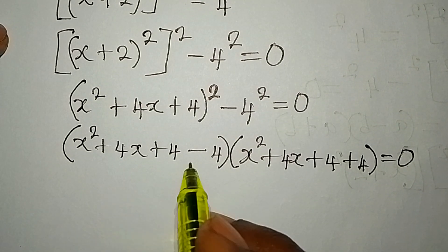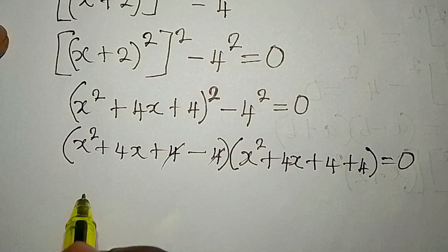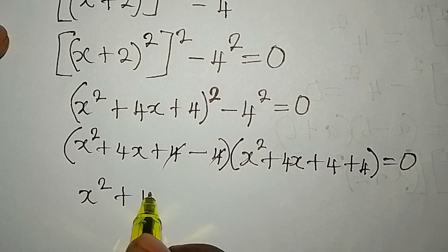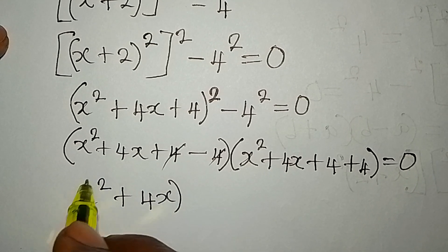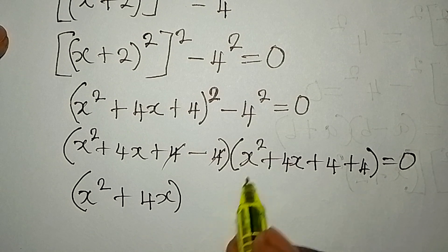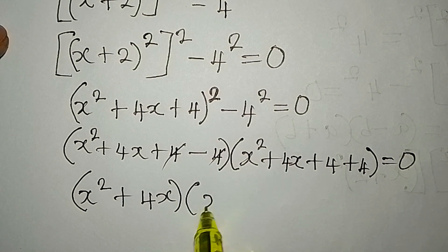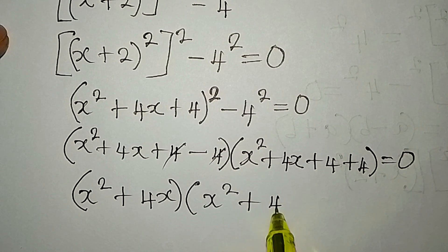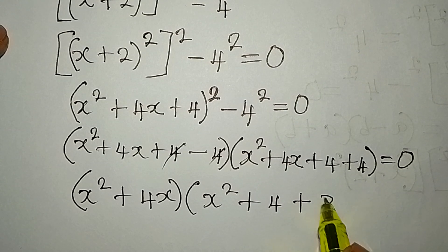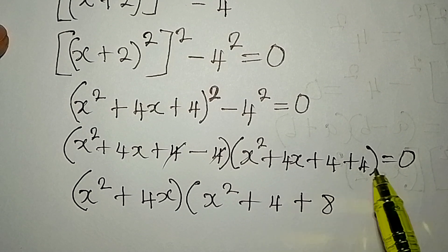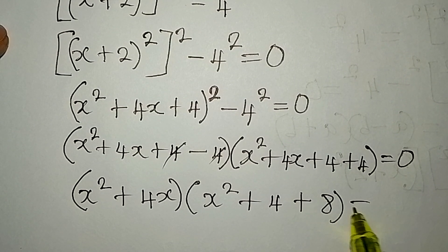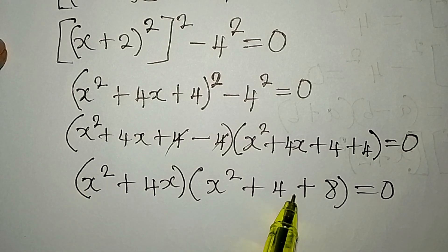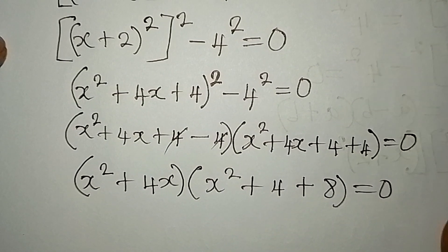From here, the minus 4 and plus 4 cancel in the first bracket, leaving x squared plus 4x. In the second bracket we get x squared plus 4 plus 8, which gives x squared plus 4x plus 8. Everything equals zero.